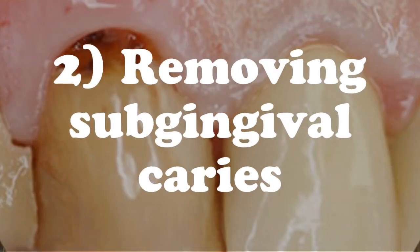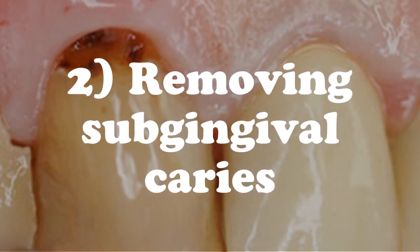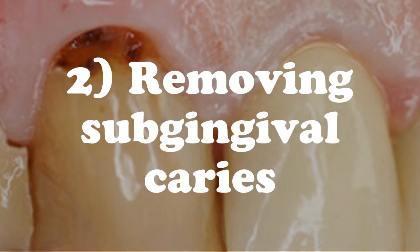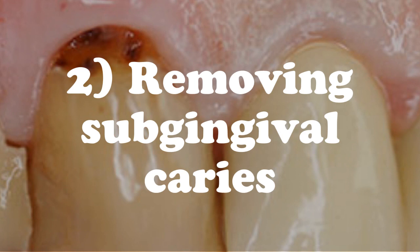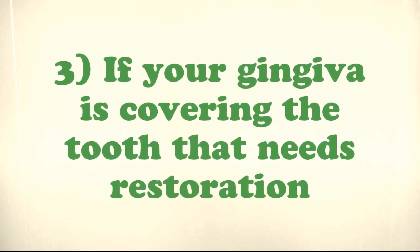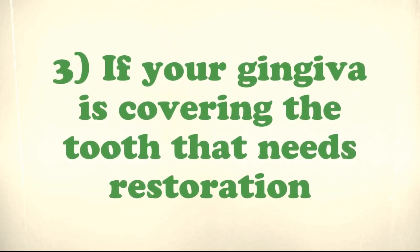The second indication is removing subgingival caries. If the caries are very deep and the gums are covering them, we need to do crown lengthening to expose the caries so we can remove them without hitting the gingiva. The third indication is when the gingiva is covering a tooth that needs a restoration — for instance, a patient who needs a post and core but the gum is covering the tooth surface.